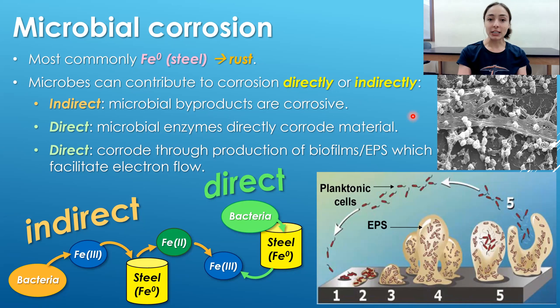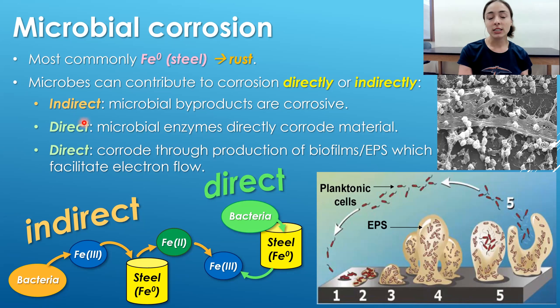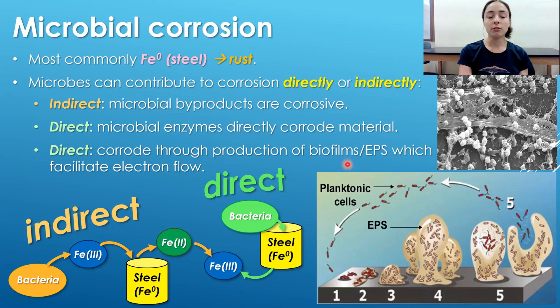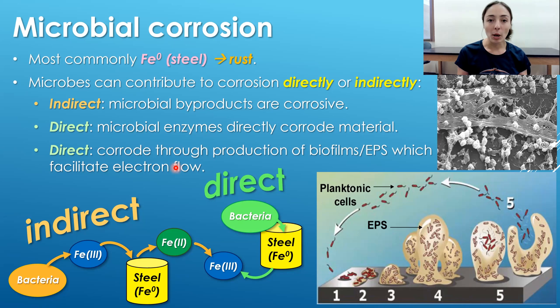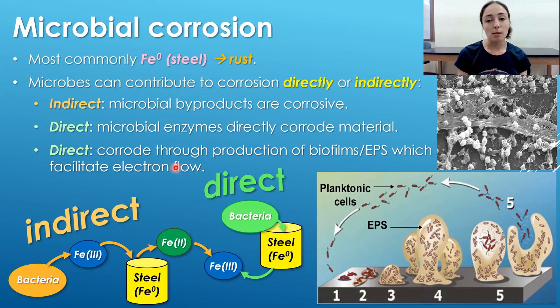Microbes can contribute to corrosion not only indirectly — by removing protective layers or producing corrosive metabolic byproducts — but also directly in two major ways. They can directly corrode material through enzymatic reactions, where microbial enzymes act on the metal surface. They can also corrode through production of biofilms or EPS (extracellular polymeric substances), which facilitate electron flow from the metal surface to the microbe, directly driving those redox reactions that oxidize the metal.